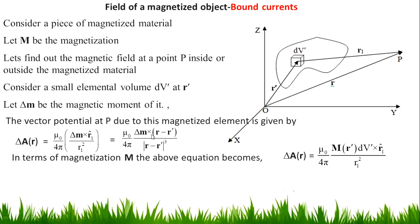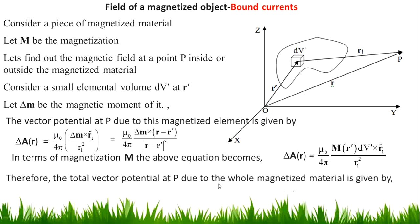The magnetization is the magnetic moment per unit volume. By using that relation we can change delta M to M of r dash into dv dash. Therefore the total vector potential at P due to the whole magnetized material is given by: vector A of r equals mu zero over 4 pi, volume integral of M of r dash cross r1 cap divided by r1 squared into dv dash.